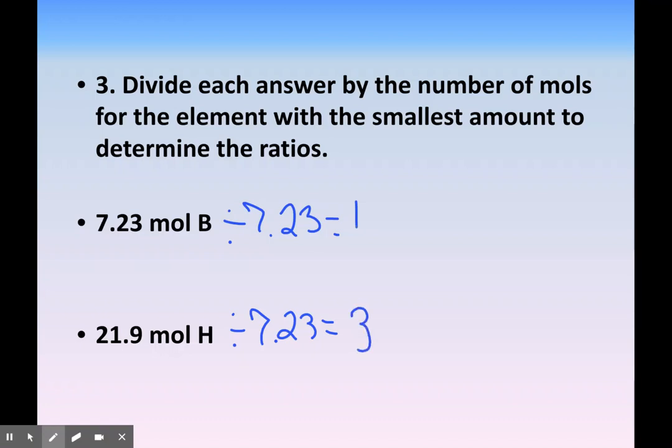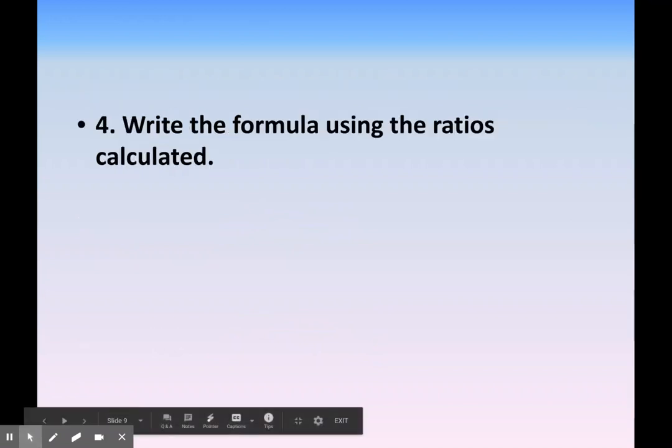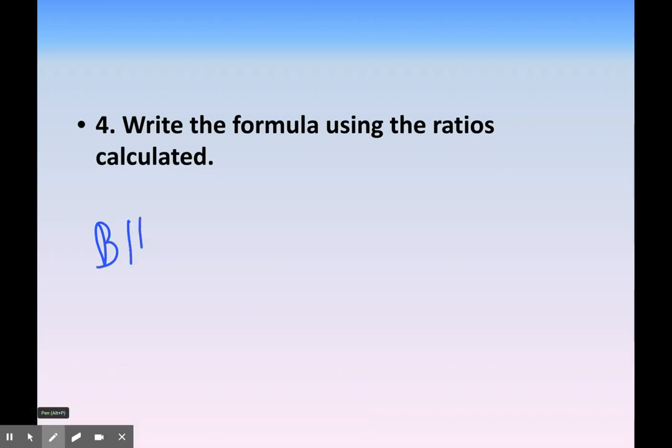These numbers almost always are going to be whole numbers. That's why carrying out your decimal places is important. Stick with two decimal places. These numbers are now the subscripts for our formula, so we have 1 boron and 3 hydrogens. Our answer is BH3.